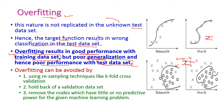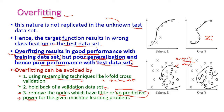How to avoid overfitting? First, using a resampling technique like K-fold cross validation — we have to completely reconstruct the training data. Second, hold back a validation data set. Third, remove the nodes which have little or no predictive power. If there is no predictive power, then that node should be completely removed. This way we avoid the overfitting problem.